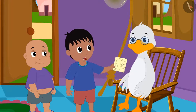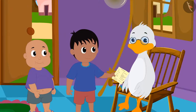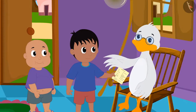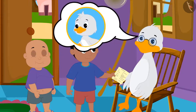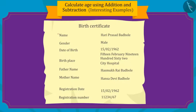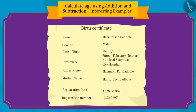"What is this birth certificate, uncle?" Uncle explains to them that a birth certificate is issued at the time of every person's birth. Important information is written on it, such as the person's name, date of birth, etc. Children, do you know about birth certificates?